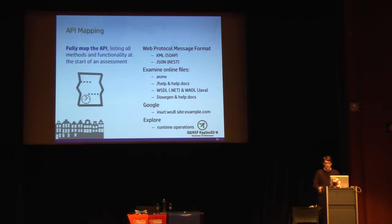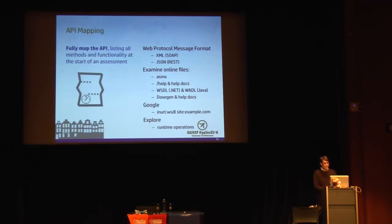Search Google for any additional information on how to use the application — you can often discover other APIs about your system through quick Google searching. As you use your application and capture runtime traffic, examine those runtime operations and start to think about other ways the API could potentially be used, or things that might not be disclosed that could be hidden in the backend.